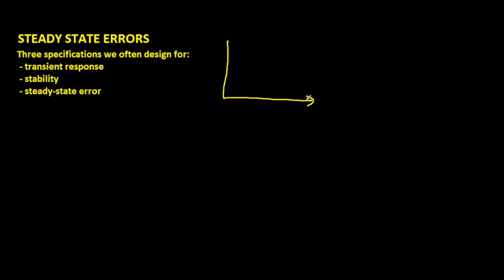The transient response refers to how the response of the system behaves over time. For example, if we had a response that looked something of this nature, we call this an underdamped response. Over time, you will first have an overshoot, then it will come back and finally settle at a certain value. With a transient response, you're often concerned about things like settling time, peak time, rise time, percentage overshoot, and how the shape looks.